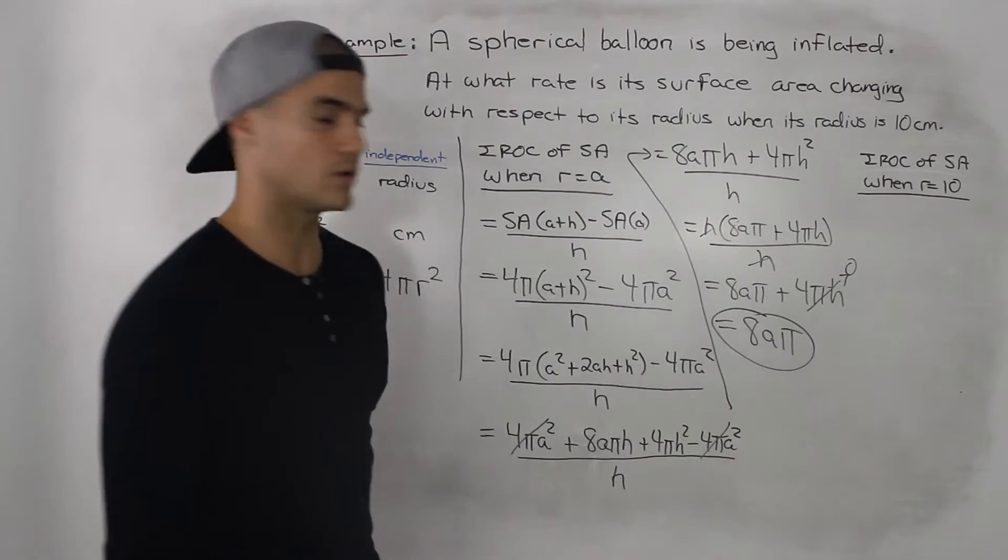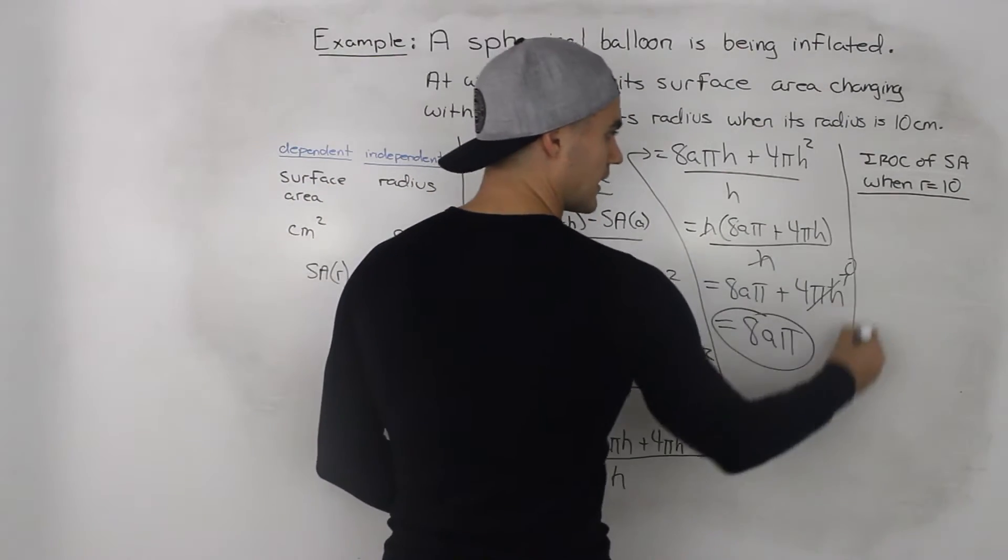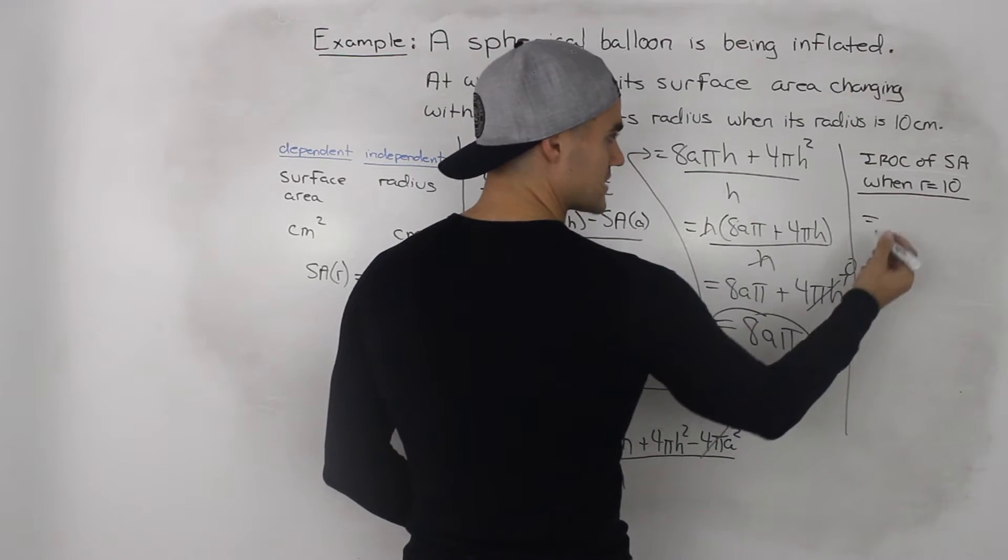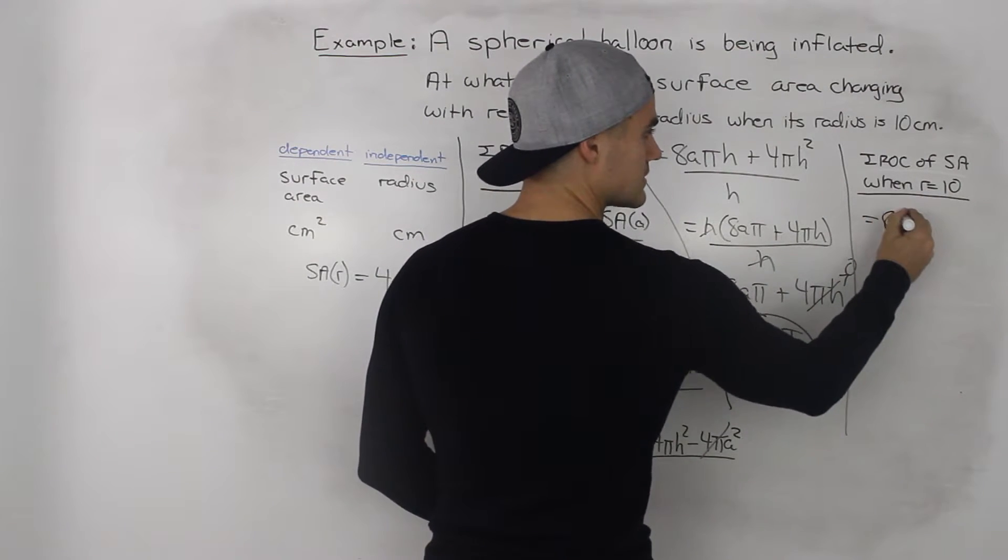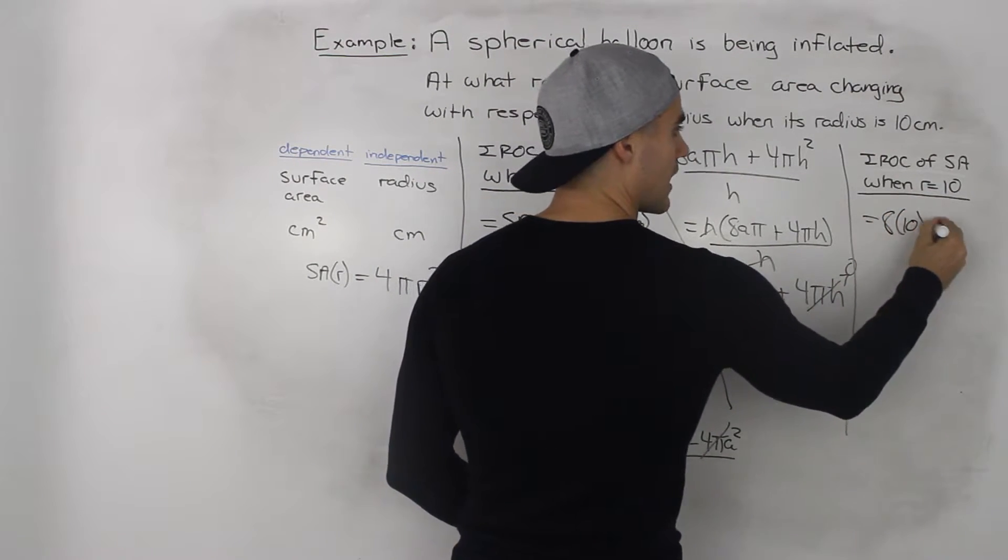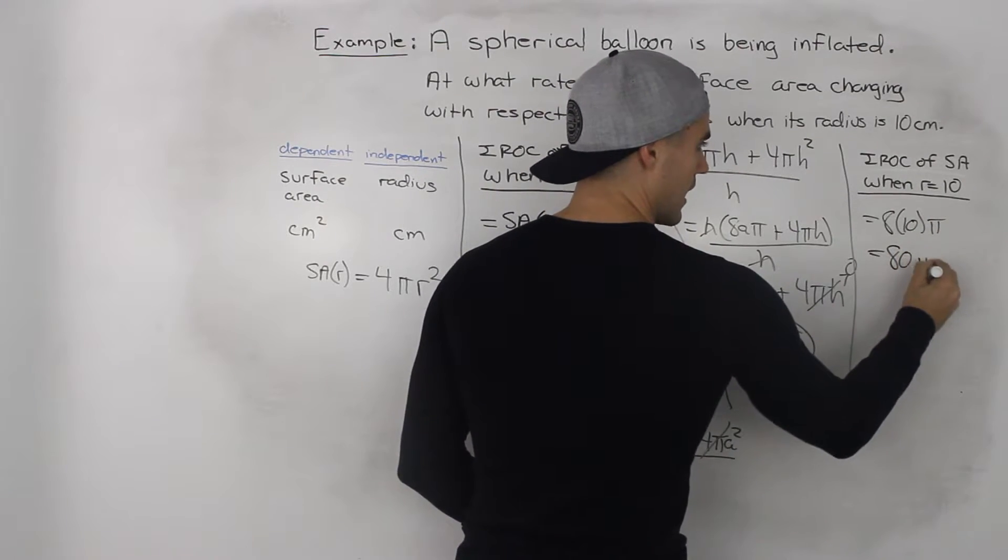And now that we have this general expression we can just plug in our radius that we're trying to find of 10. So 8 times 10 times π. And that gives us 80π.